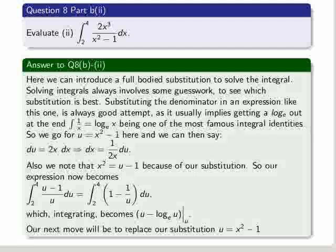And integrating this now becomes a lot more simple because we've got u minus log e of u over the interval of u. So our next move will be to replace our substitution, u equals x squared minus 1.